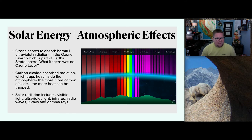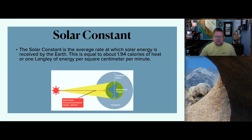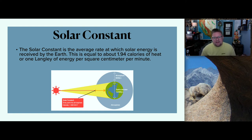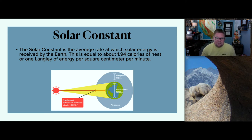Moving forward — solar energy and atmospheric effects. Since we've now acknowledged that energy does come from the Sun and come to the Earth, we do measure it, and we call it the solar constant. The solar constant is the average rate at which solar energy is received by the Earth — about two calories of heat per square centimeter per minute. We're looking at this as a measurement of, on average, how much energy is coming through. The reason it's an average is that seasons change, length of daylight changes, and areas in which solar radiation is absorbed versus released vary.